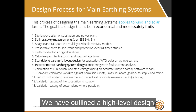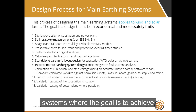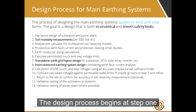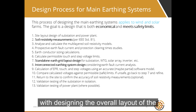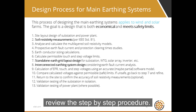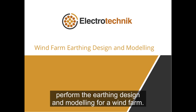We have outlined a high-level design process for wind and solar farm earthing systems where the goal is to achieve a design that is both economical and meets safety limits. The design process begins at step one with designing the overall layout of the substation and the main power plant. You can pause the video here to review the step-by-step procedure.